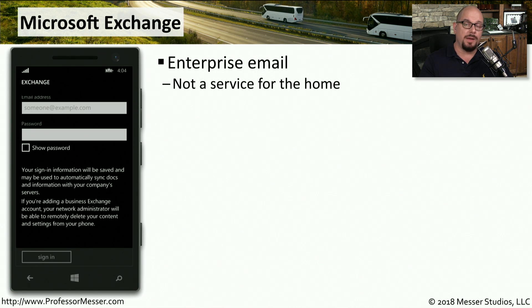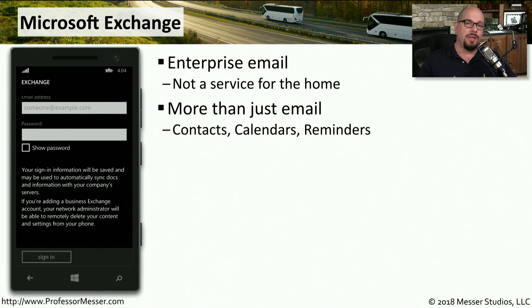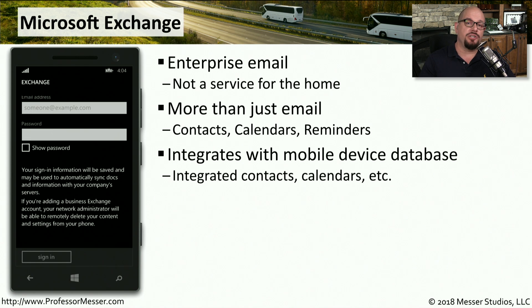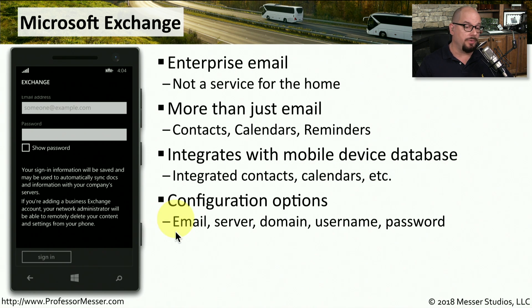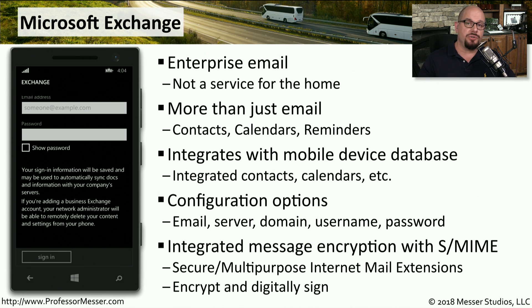For using email at home, POP3, IMAP, or SMTP probably works fine. But at the office, you'd like to integrate email with a calendar, look up contacts in a database, or have reminders on screen — in those cases, you're probably using an enterprise email system such as Microsoft Exchange. Exchange allows synchronization so a contact list on your phone stays synchronized with the server. Configuration requires an email address, Exchange server name, Windows domain name, username, and password. Exchange also provides additional security via S/MIME — Secure Multipurpose Internet Mail Extensions — which allows you to encrypt and digitally sign messages.